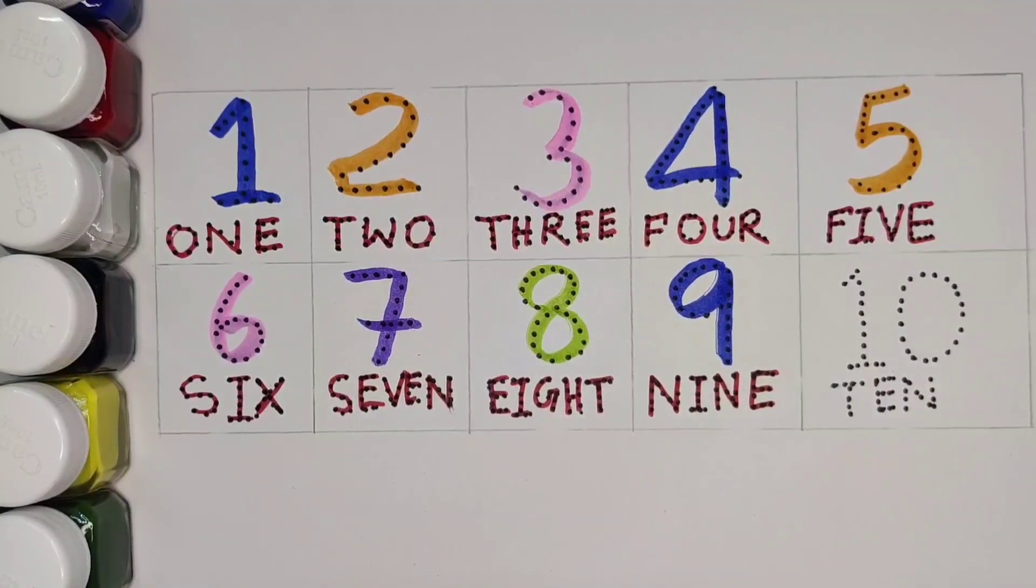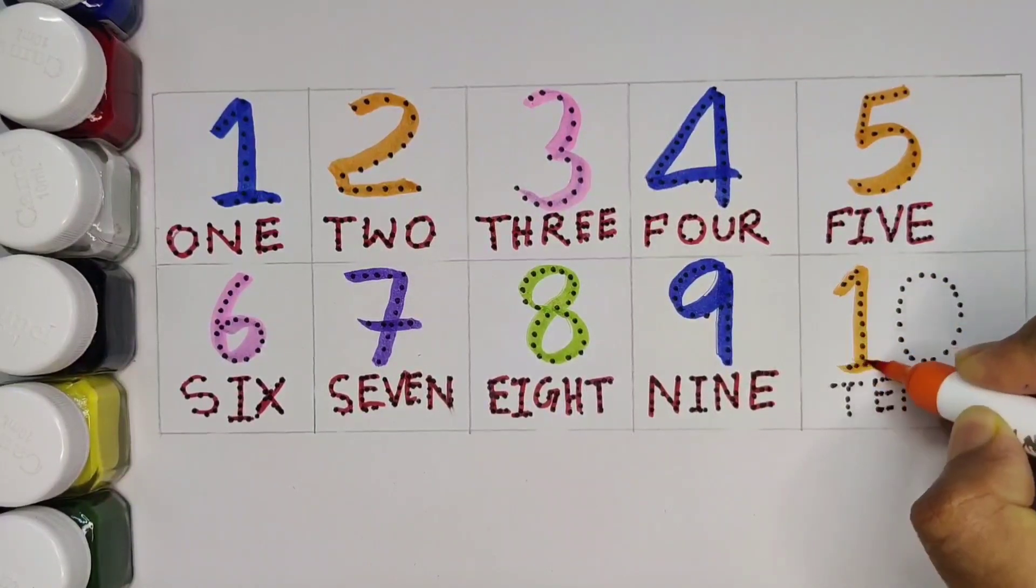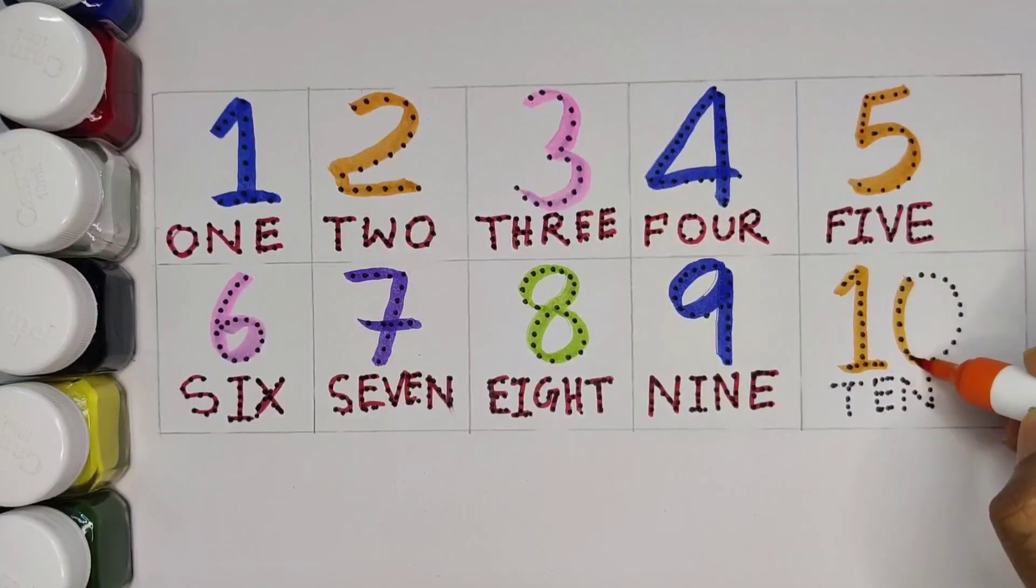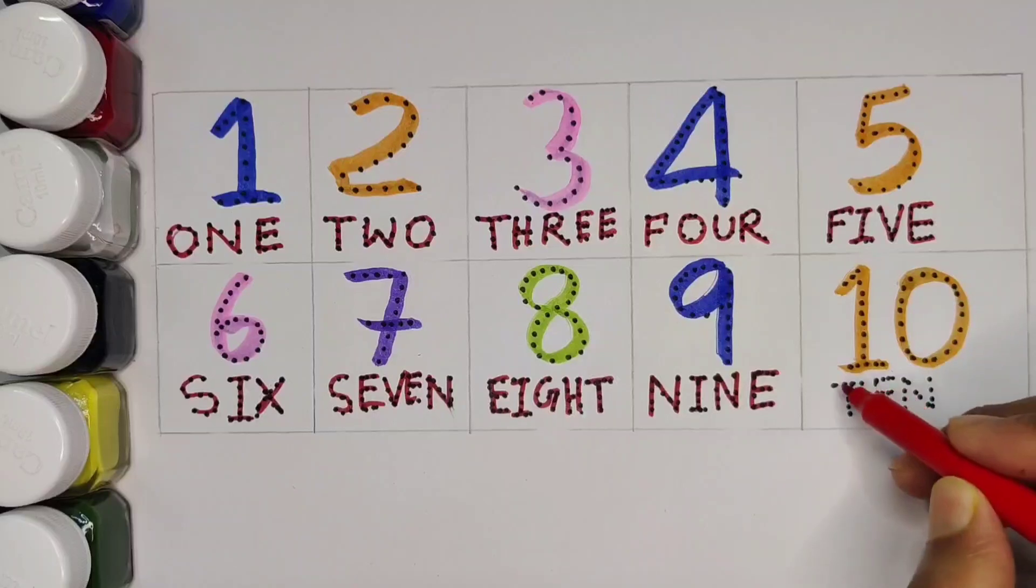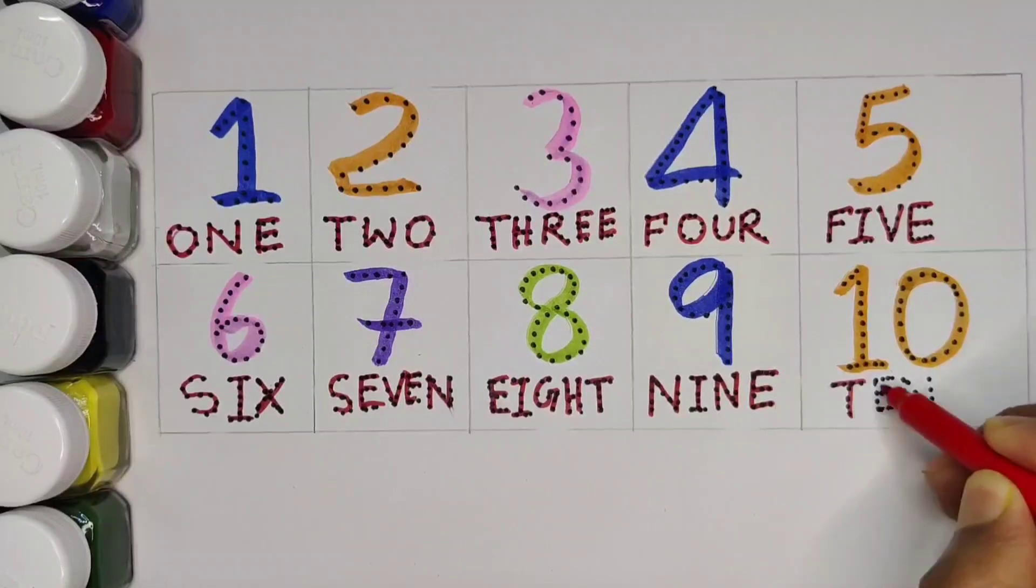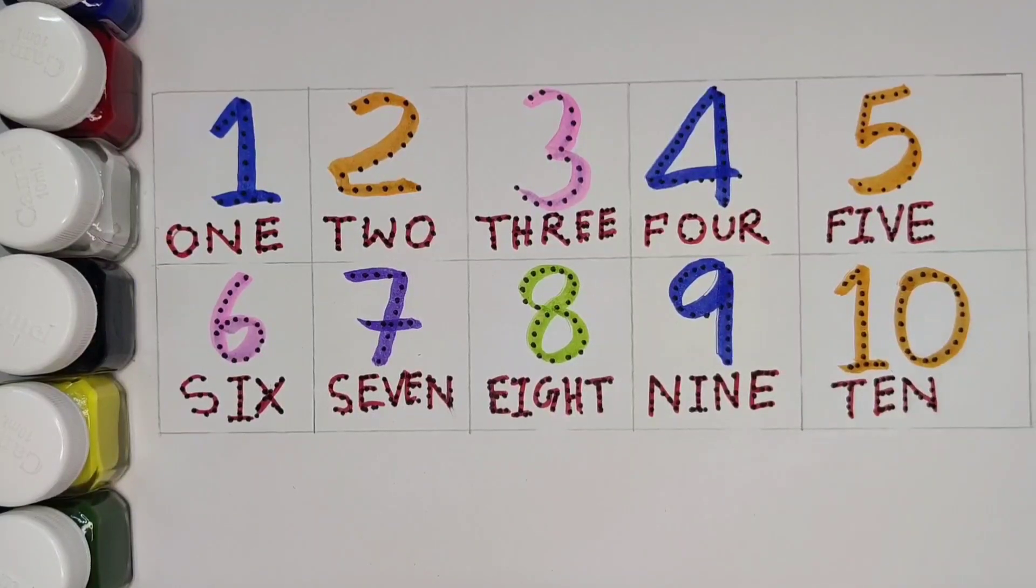Orange color. 1. 0. 10. Orange color. Spelling is T.E.N. 10.